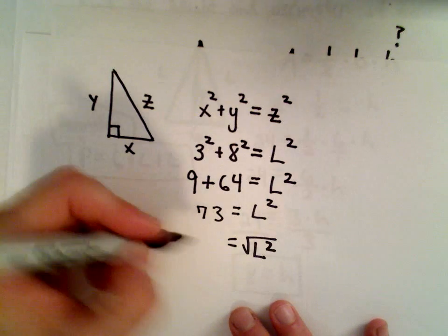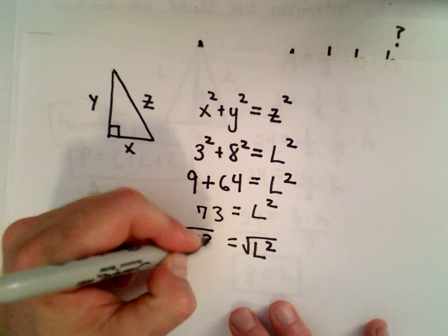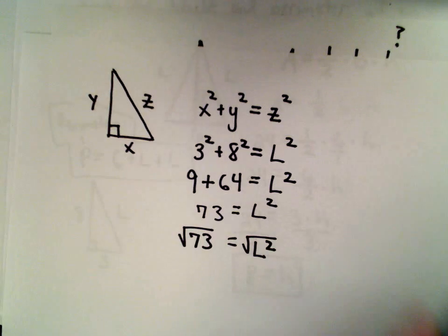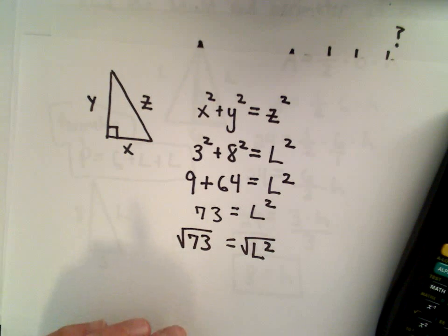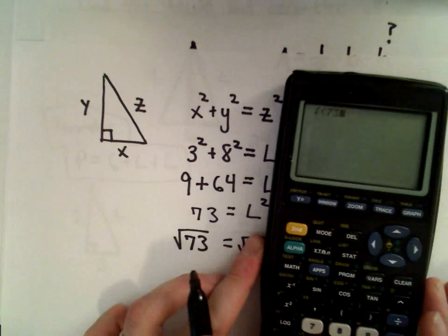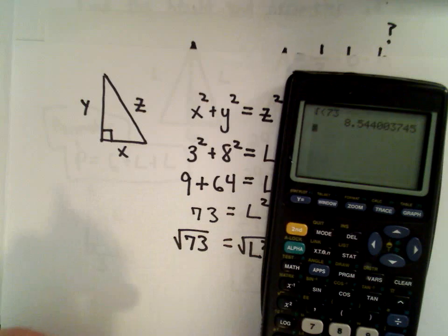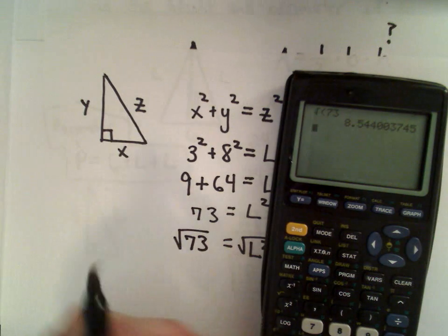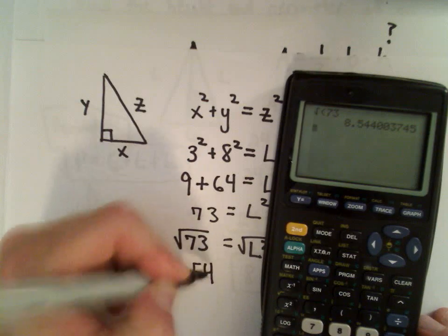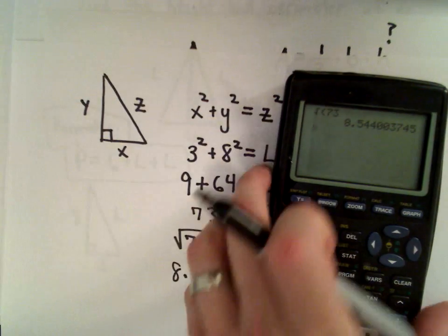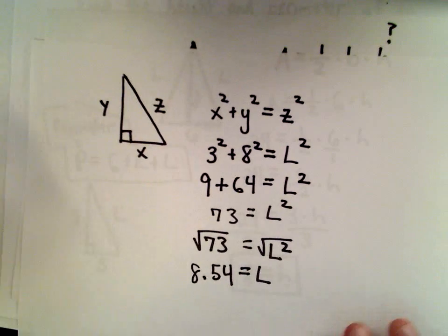If I take the square root of the right side, I've got to take the square root of the left side. And let me get a calculator out here. So let's see, let's do the square root of 73. I'm getting that to be 8.54, roughly. So that's going to be our value for L.